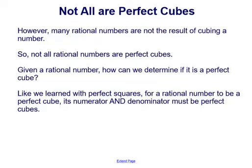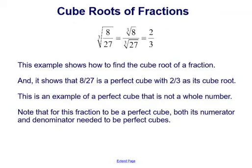However, many rational numbers are not the result of cubing a whole number, so not all rational numbers are perfect cubes. For a rational number to be a perfect cube, its numerator and denominator must both be perfect cubes. For example, the cube root of 8 over 27 can be split into the cube root of 8 over the cube root of 27, which equals 2 over 3.